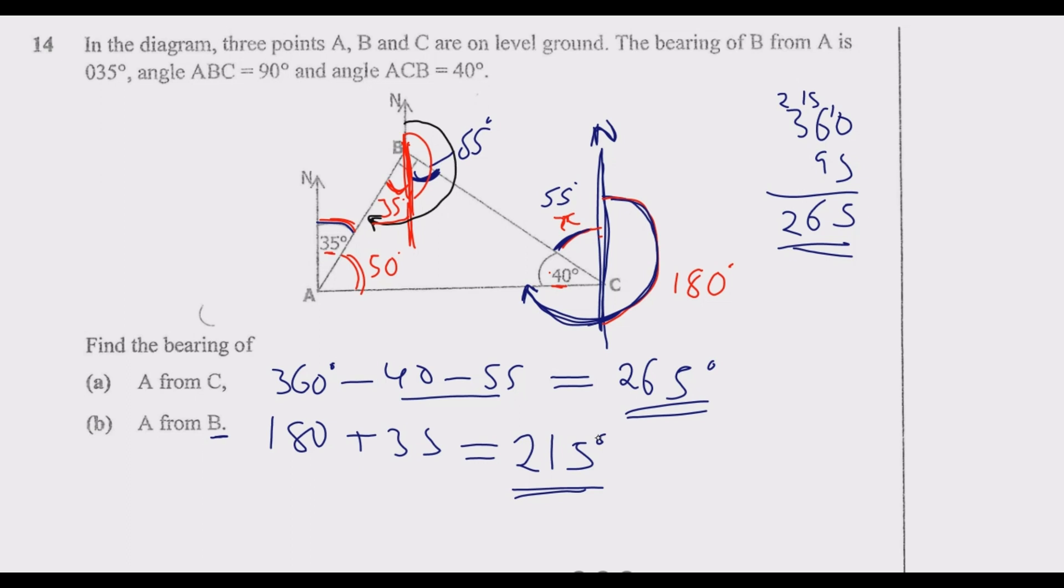So 215 is the bearing of A from B. Take note: from is where we turn from. You need to draw a north there and rotate degrees until you meet the line that is moving you to the destination point. Similarly here, we turn from C until we meet the line that is going to A. In that case, you are assured of getting the full marks. This is how you answer this question to get the four marks.